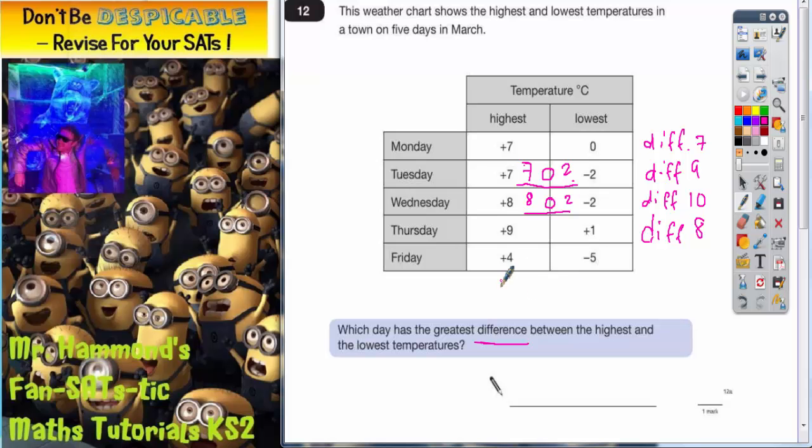The final one, again we're back to a positive and a negative number. So let's put a zero on there. Zero to four is four. Zero down to minus five is five. Put your two gaps together. Four and five makes nine, so that's a difference of nine.